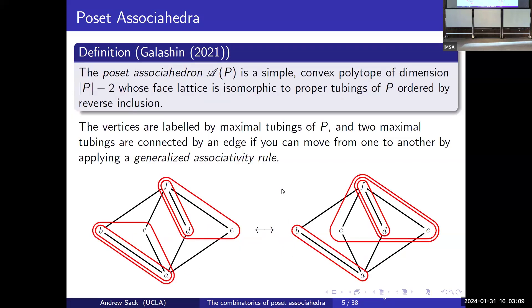Galashin defined the poset associahedra, which is a simple polytope whose face lattice is isomorphic to the set of proper tubings ordered by refinement. We can think of two vertices as connected if we can move from one to the other by a single generalized associativity move. What that looks like in both cases is if we delete one tube and put it back in another one.